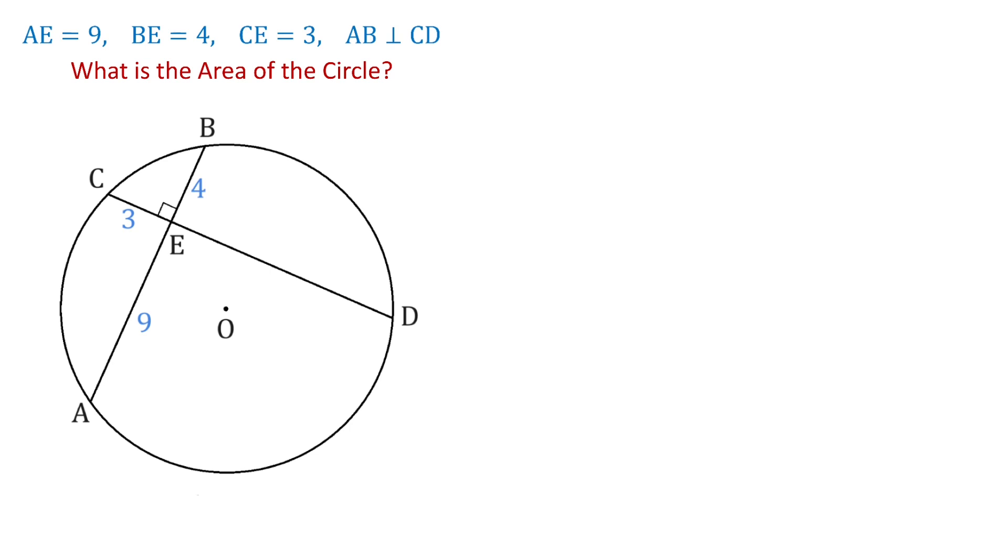We need to find the area of this circle, and the formula we will use is A equals pi R squared. To find the area, first we need to find the radius. As you see,